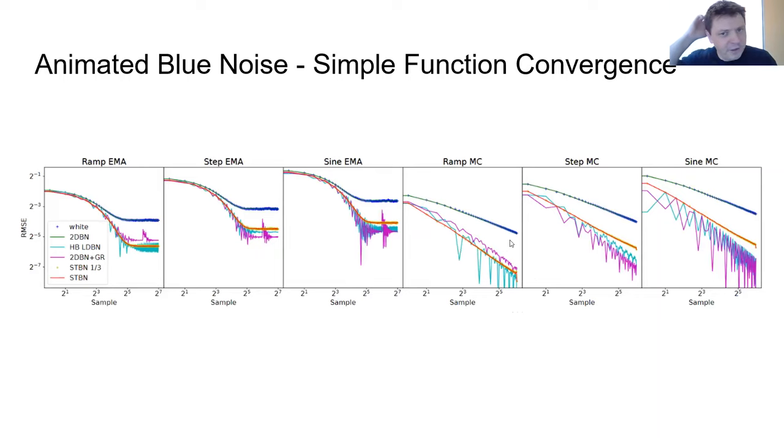So looking at function convergence, our spatiotemporal blue noise is in red and these are just some simple functions that we're converging or integrating. And so the important things are that our noise is in red, white noise is in blue, which you can see does much worse than our noise consistently or the other noises.